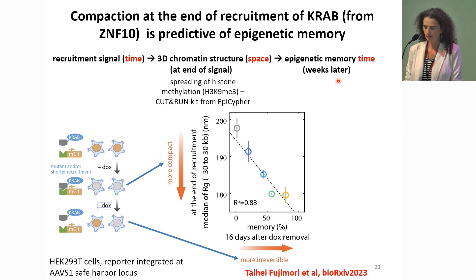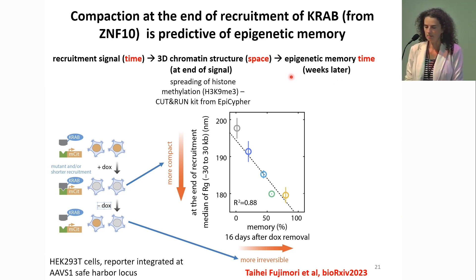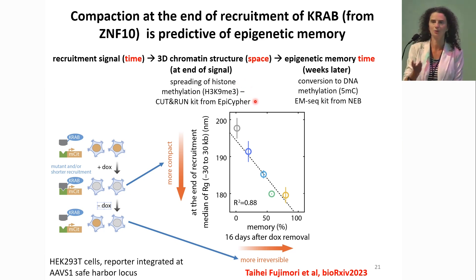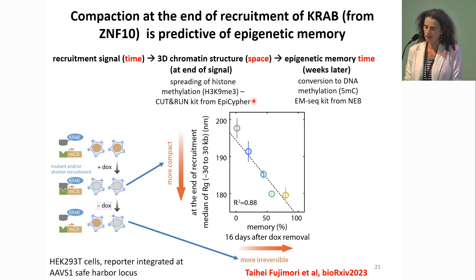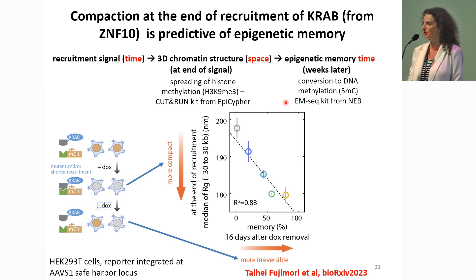Somehow the cells take recruitment time of the KRAB domain, turn it into spatial compaction and 3D chromatin structure, and then decode it as epigenetic memory weeks later. Looking at the molecular mechanism, the compaction is connected to spreading of histone methylation — we used the CUT&RUN kit from EpiCypher mentioned this morning. At the level of weeks later, it actually gets converted to DNA methylation, which we measured with the EM-seq kit from NEB, also discussed this morning.